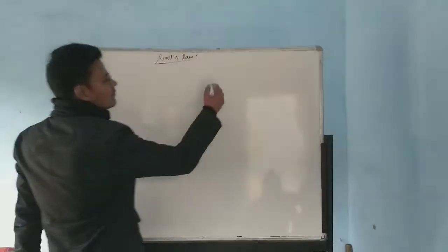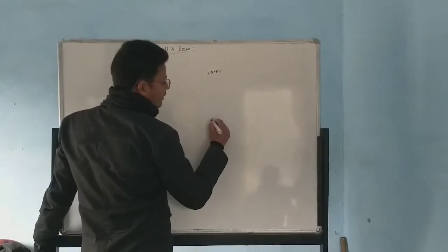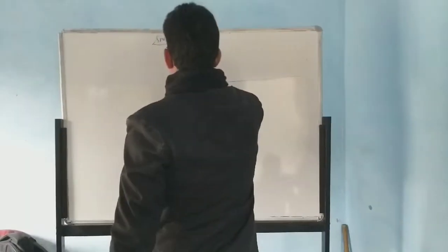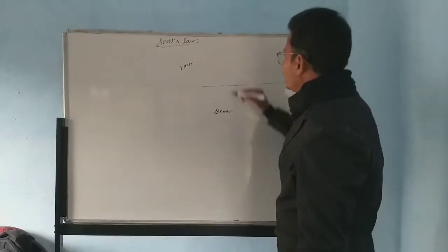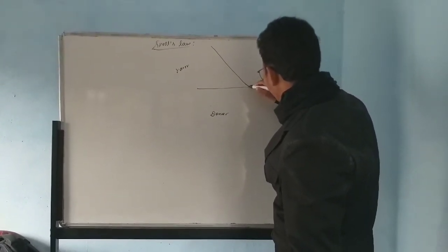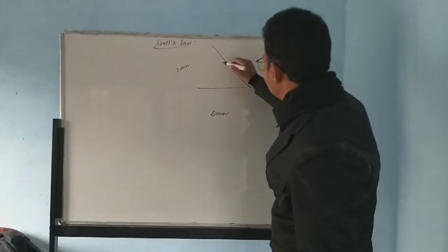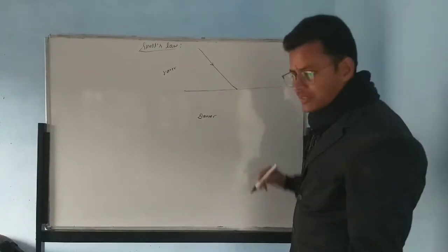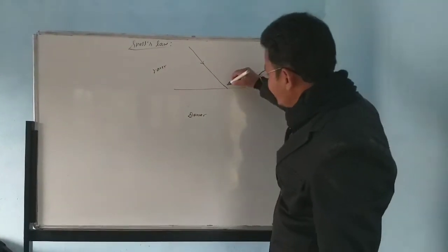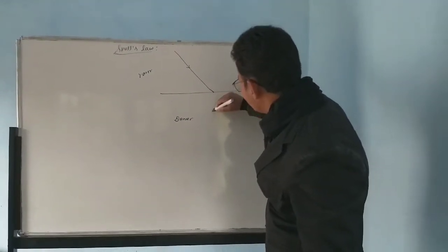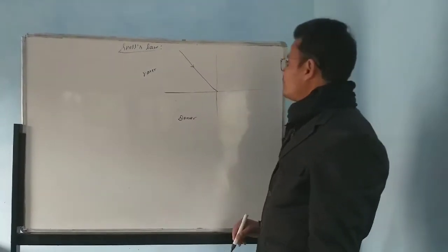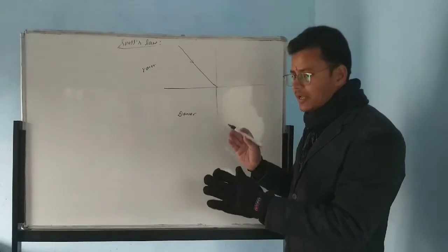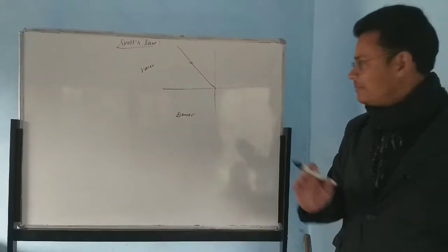I have two mediums here — one is the rarer medium and one is the denser medium. This is the ray of light which is incident here at the point of incidence. This is the incident ray. At this point we draw the normal — the perpendicular drawn at the point of incidence. When the ray of light travels from rarer to denser medium, it bends towards the normal.